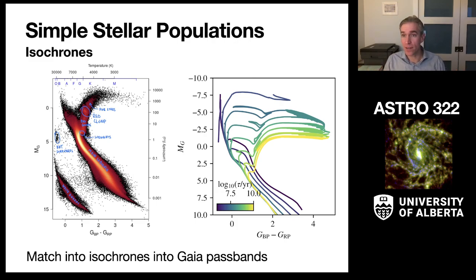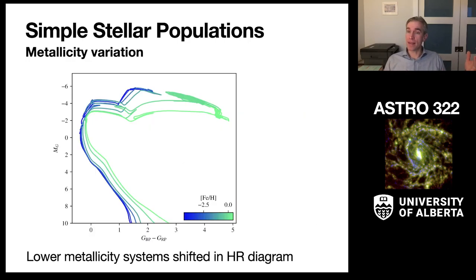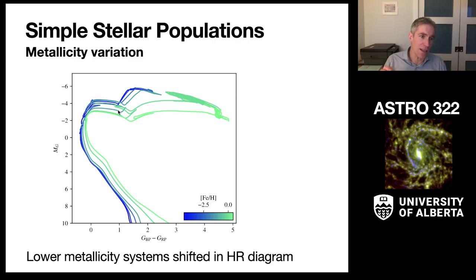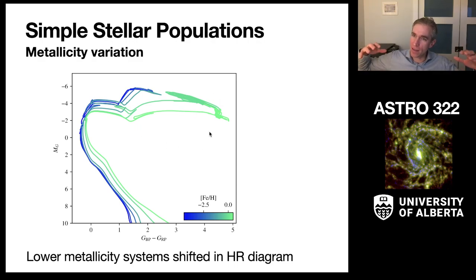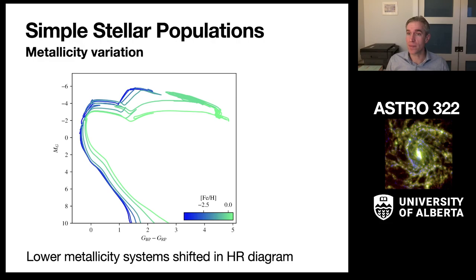The other factor we often have to consider in fitting isochrones is metallicity. Low metallicity stars tend to be hotter and brighter, which changes their emergent light. For a ~3 billion year old population in Gaia passbands, the blue curves are the lowest metallicity — hottest and brightest — while higher metallicity stars are a lot redder, because more lines in their atmospheres push temperatures cooler. We need to take into account metallicity effects when doing isochrone fitting.